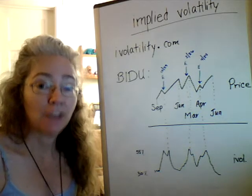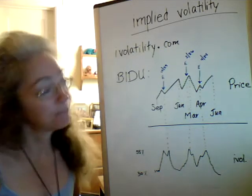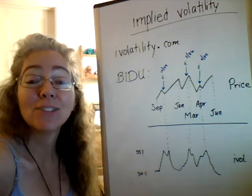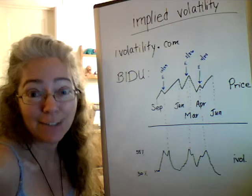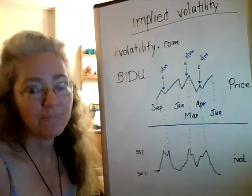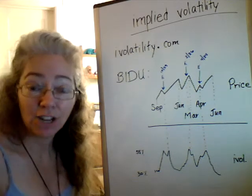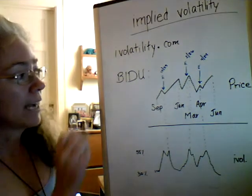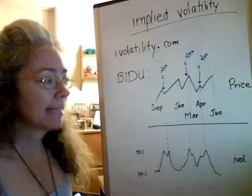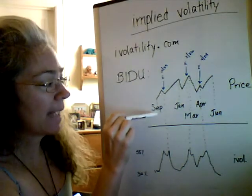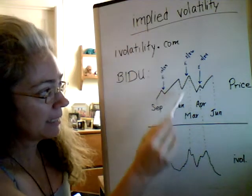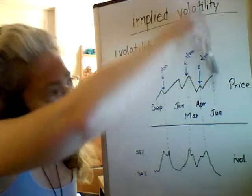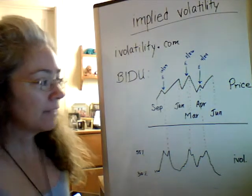Rather than showing this on my computer screen, I went ahead and drew both the price chart and the volatility chart for Baidu, which lets me do a direct comparison. I chose Baidu because it shows some pretty good spikes. This top chart is the price chart — starting back in September, you can see a little peak in January, another in March, a tiny peak in April, and now in June we're back up near the highs.